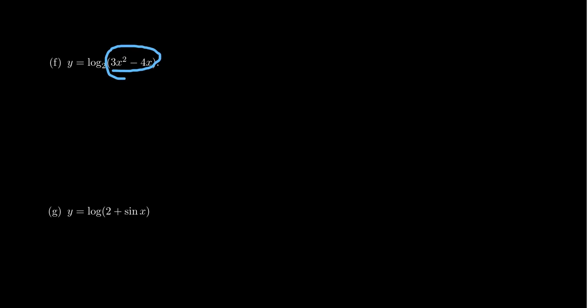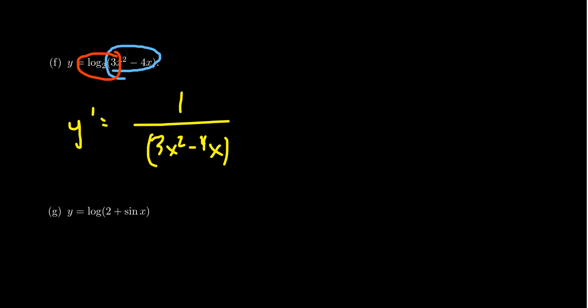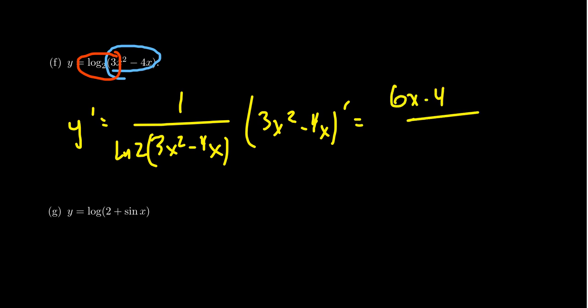How about y equals log base 2 of 3x squared minus 4x? You have an inner function — the polynomial 3x squared minus 4x — and an outer function, log base 2. Its derivative y prime: the outer derivative gives 1 over 3x squared minus 4x, but you also multiply by the tariff, which is the natural log of 2. We still compute the inner derivative — the derivative of 3x squared minus 4x — which by usual rules gives 6x minus 4. This sits on top of the natural log of 2 times 3x squared minus 4x.